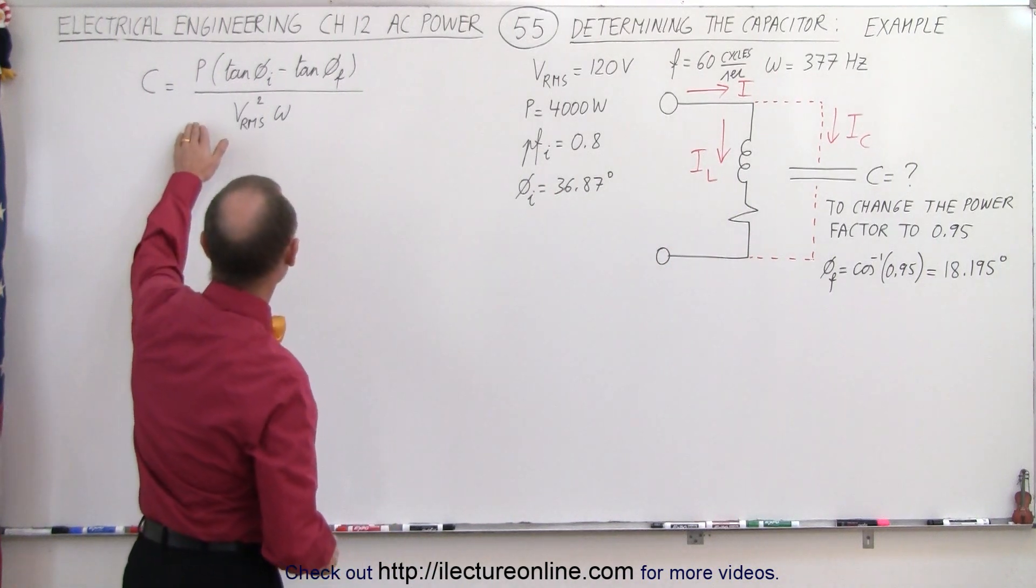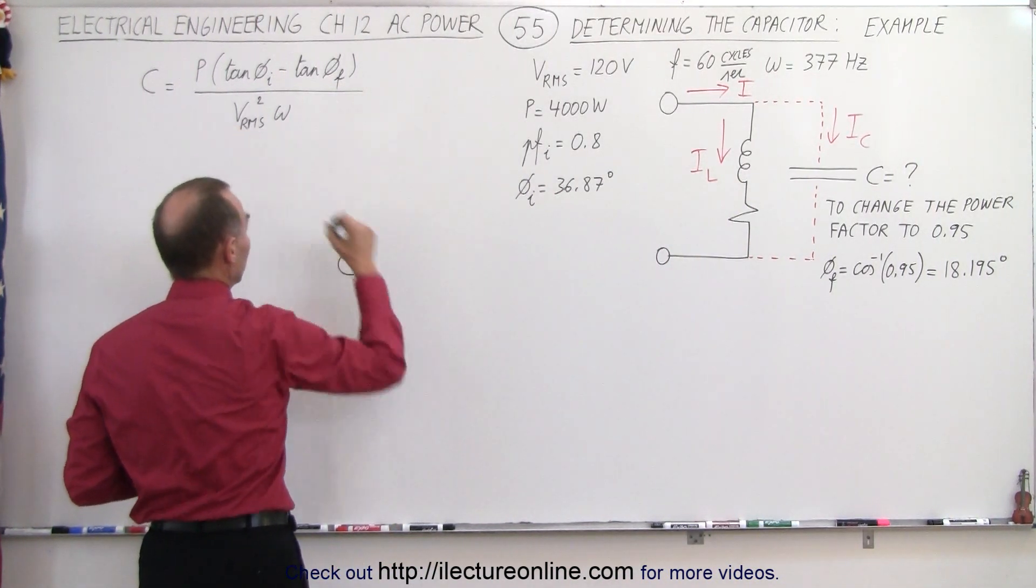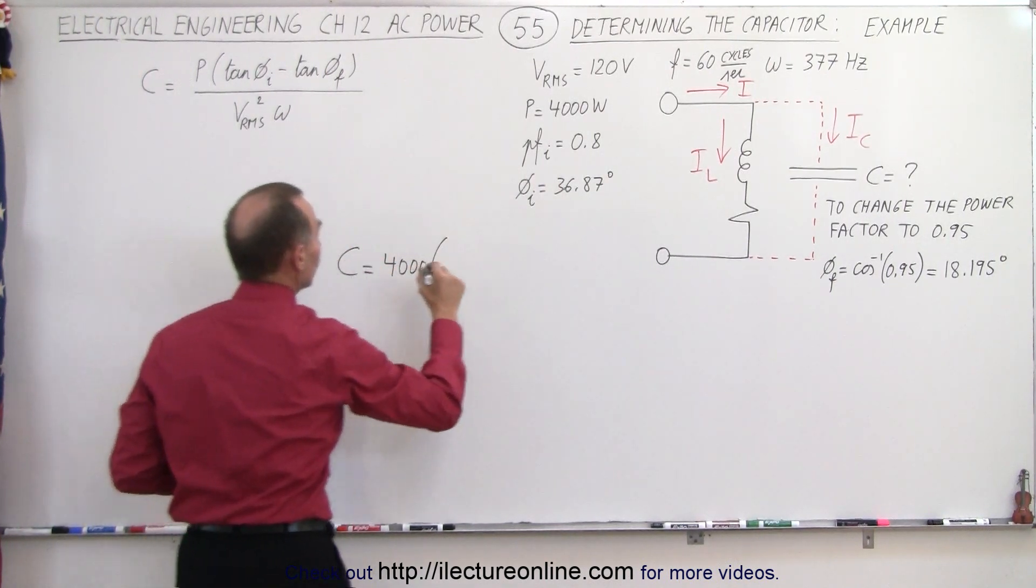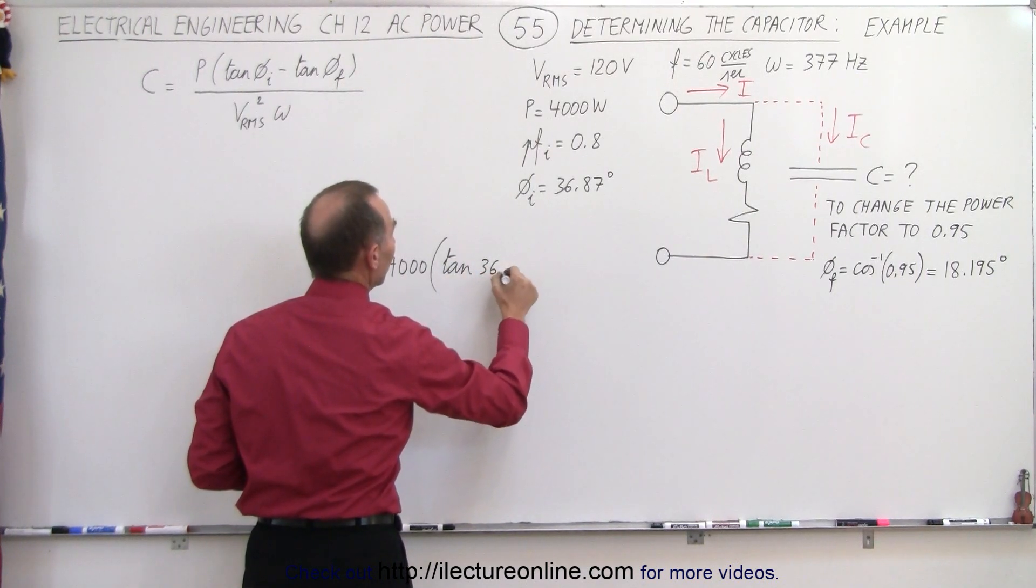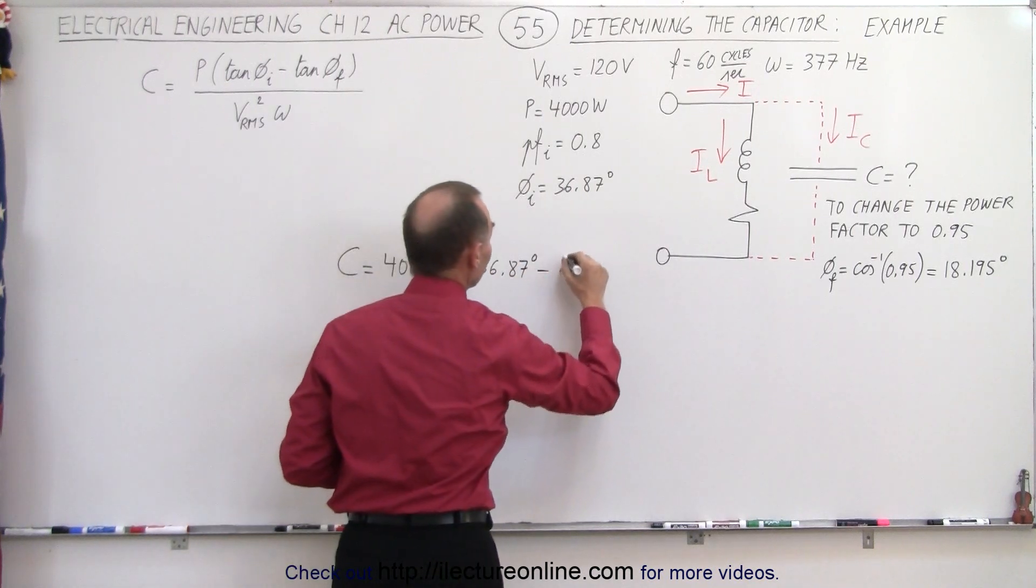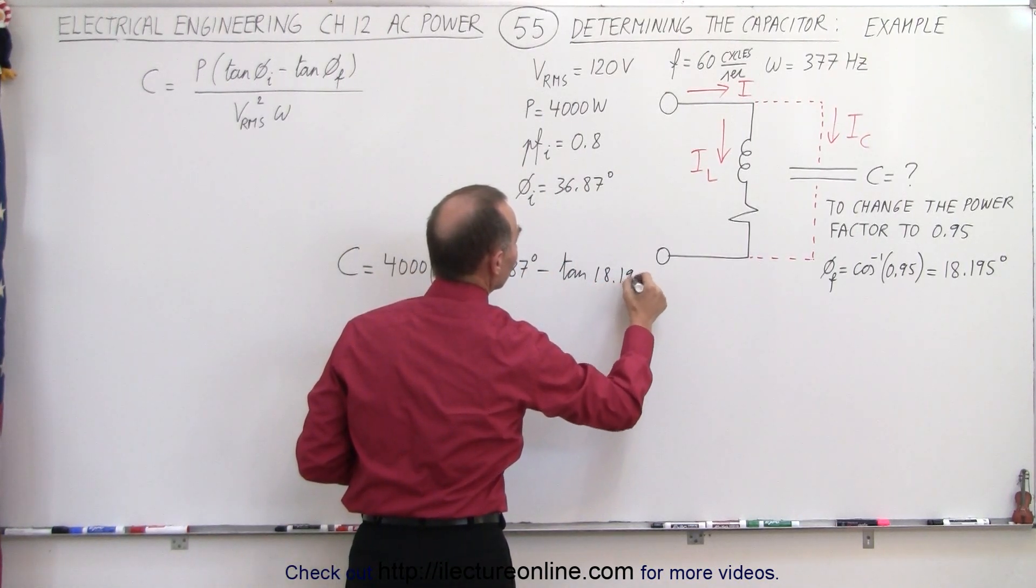So now using this equation right here, we can see that the capacitor is equal to the power, which is 4000 watts, multiplied times the tangent of the initial phase angle, so the tangent of 36.87 degrees, minus the tangent of the final phase angle, tangent of 18.195 degrees.